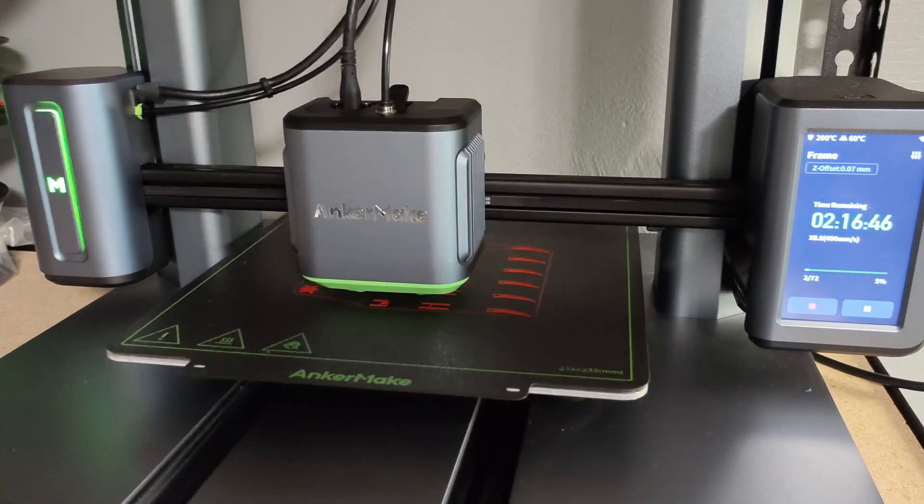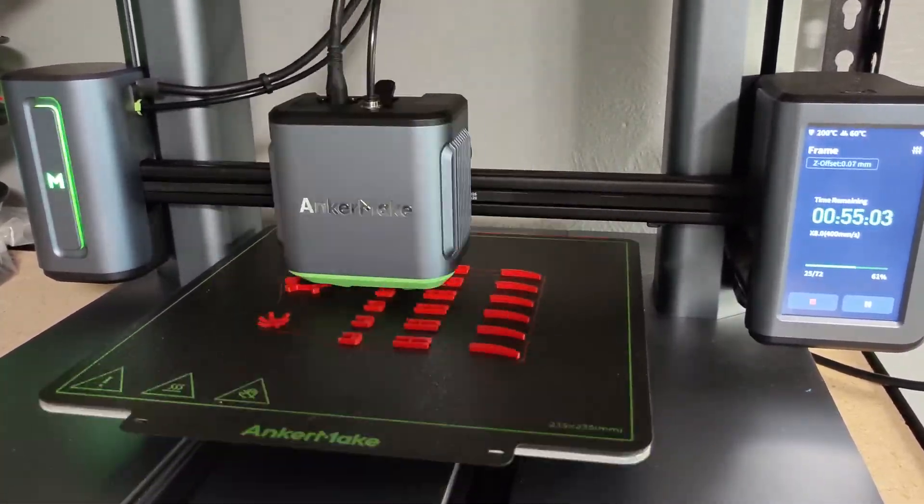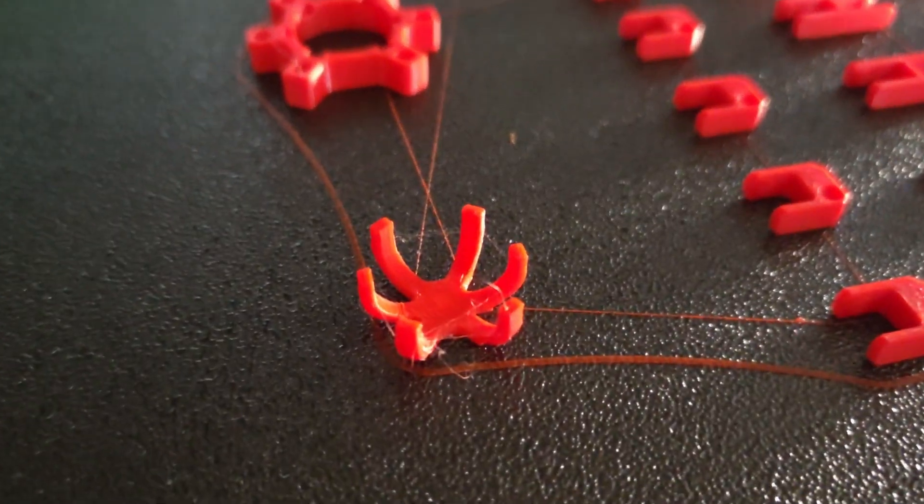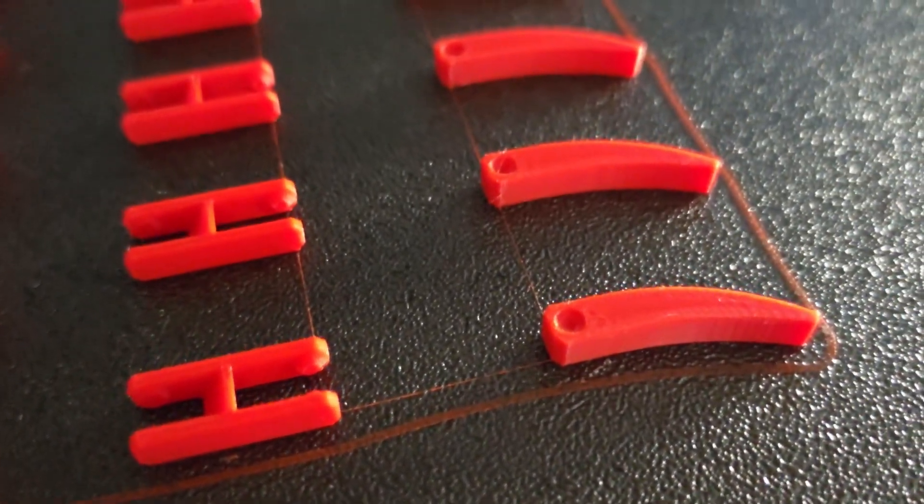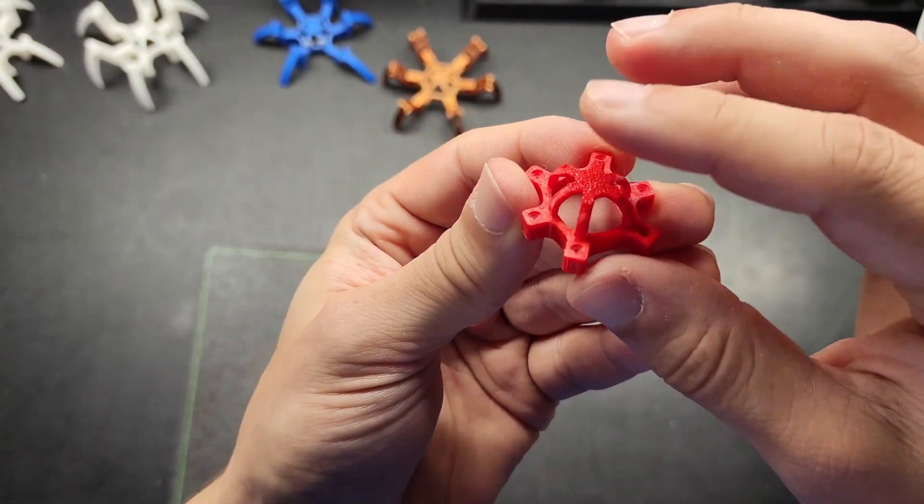This was literally the first time I ever printed with a 0.2mm nozzle on any printer, so I didn't really know what to expect. As you can see though, it turned out flawlessly. I guess it makes sense since the nozzle got 50% smaller, but the model only got 40% smaller, but still.